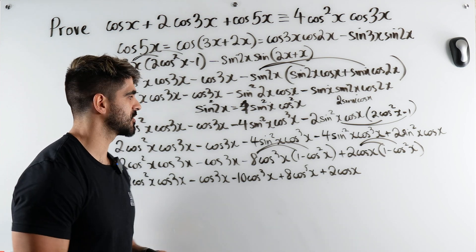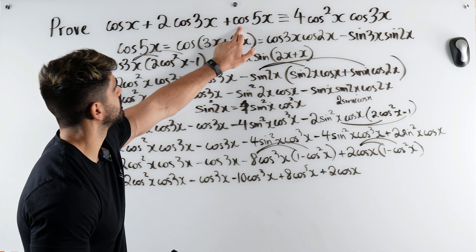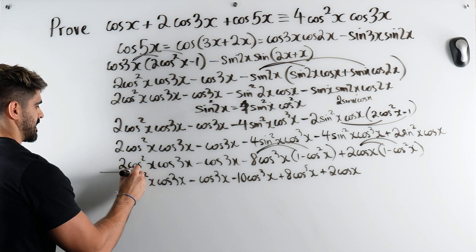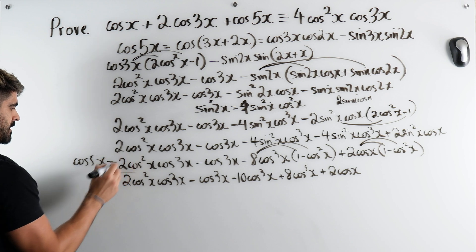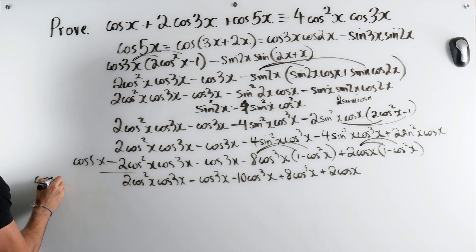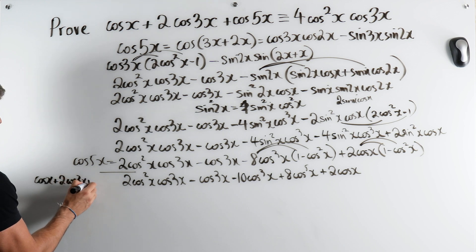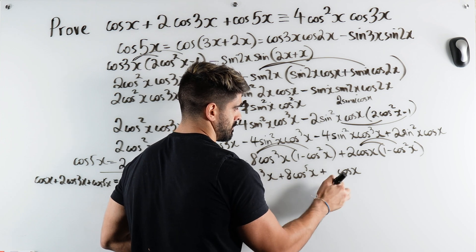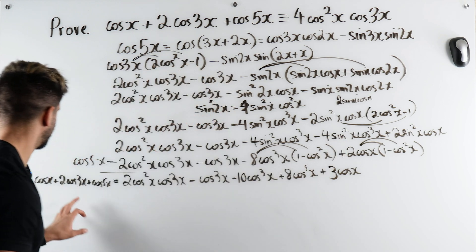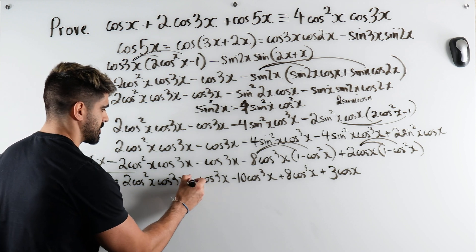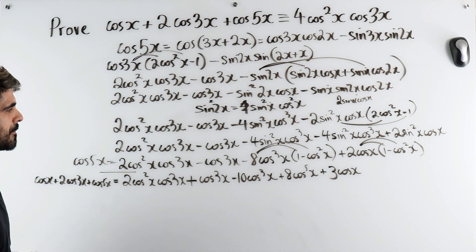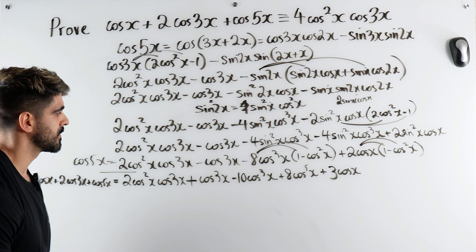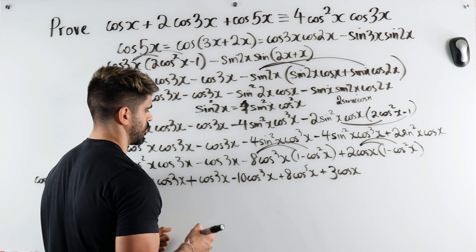Remember, this expression was just what came from cos5x. Now we need to add the other two terms from the original left side: cosx and 2cos3x. When we add cosx, the 2cosx becomes 3cosx. When we add 2cos3x, the minus cos3x and the additional 2cos3x give us just cos3x. So we deal with that cos3x separately.